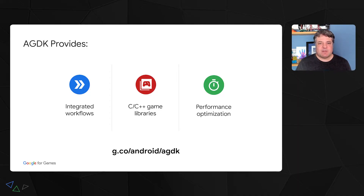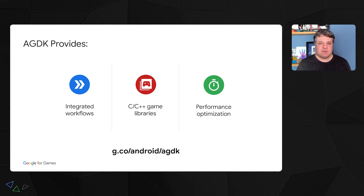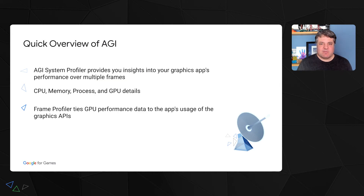Android GPU Inspector is part of the Android Games Developer Kit and falls within the performance and optimization category of the kit. The goal of AGI is to help developers such as yourselves to optimize your game both pre- and post-launch. With AGI, our aim is to build a tool that will help you profile and debug graphics-intensive applications on Android, regardless of device.